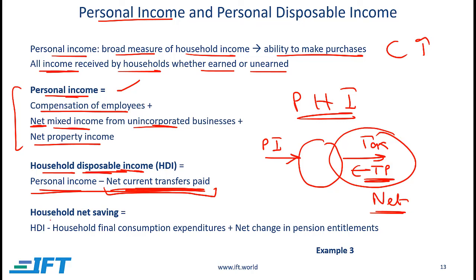Next we have household net savings. Starting from household disposable income, we subtract household final consumption expenditure and then add the net change in pension settlements, which gives us household net savings.